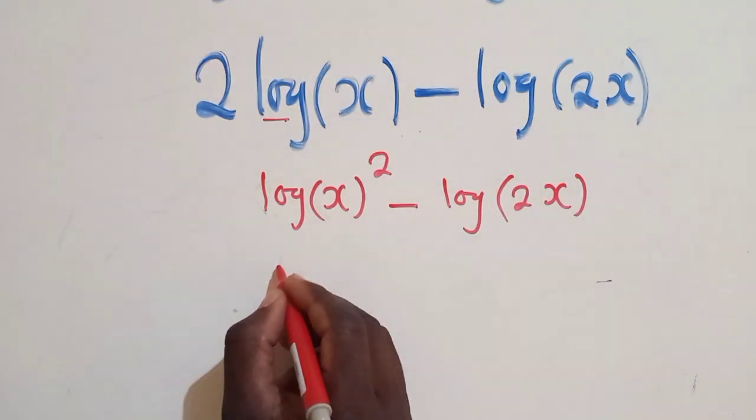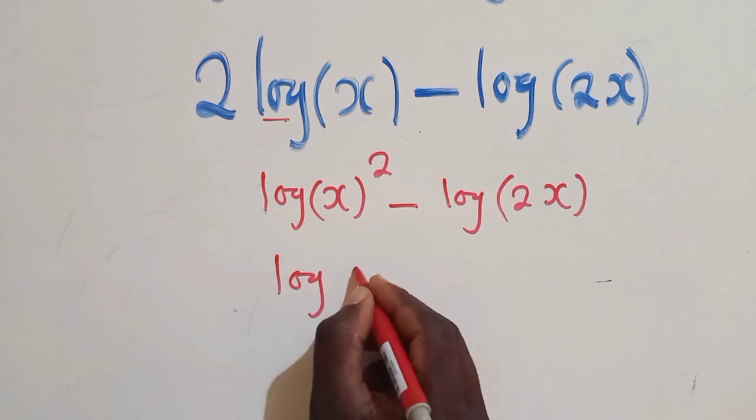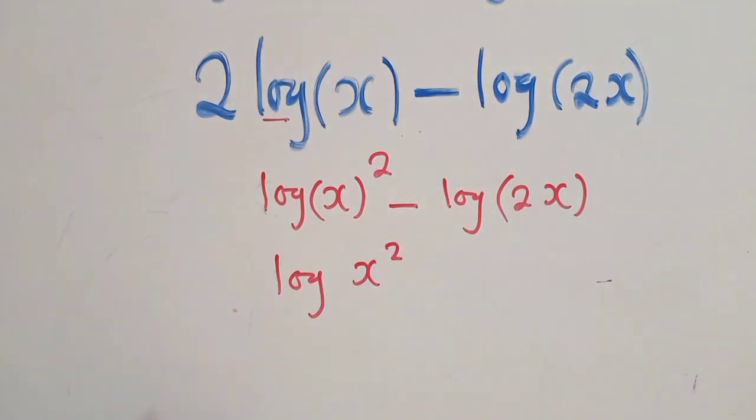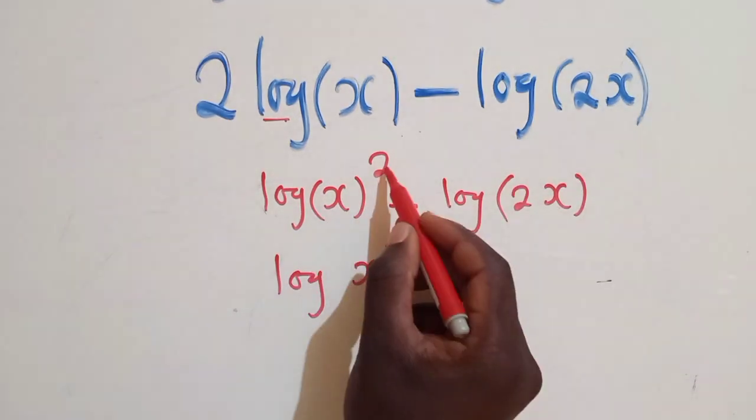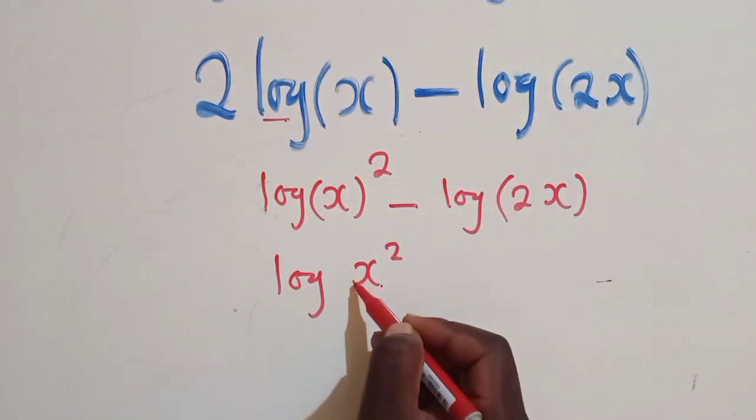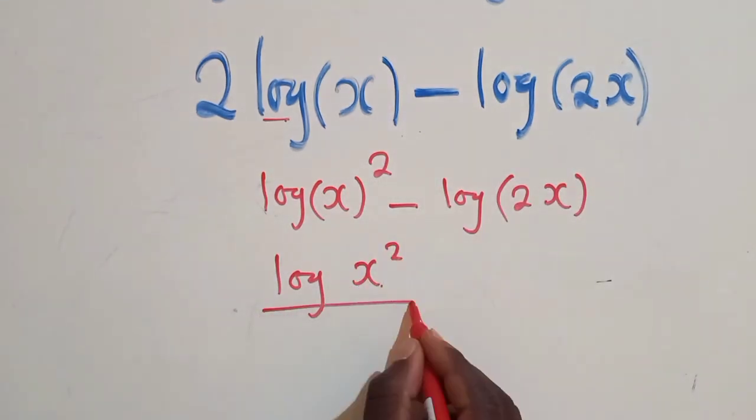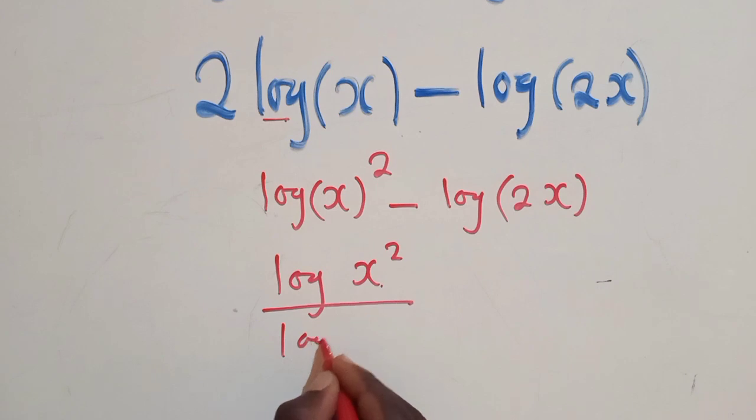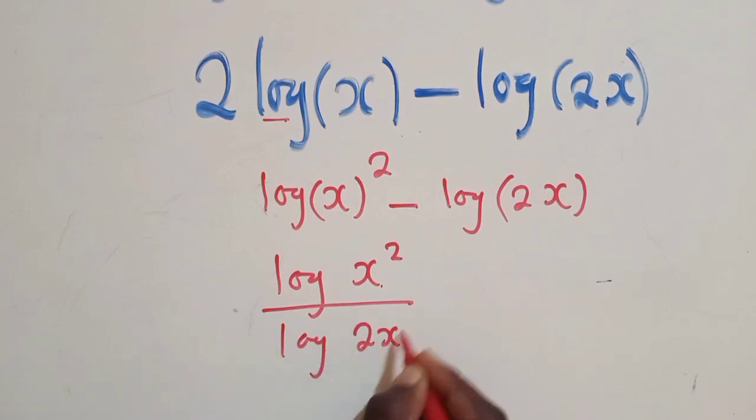Using property number 2, this will be log of X power 2 over log of 2X. It's log of X power 2 over 2X.